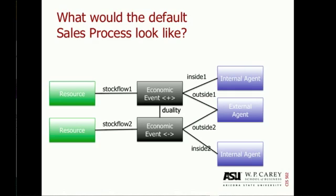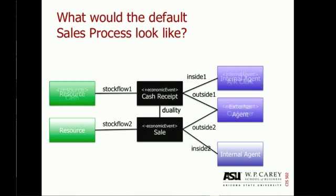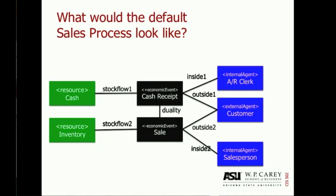If you remember from the first video, this is the basic pattern. There are two economic events, an increment and a decrement event, that are linked together with a duality association. For every event, you identify the resources that are either being increased or decreased and the agents who participate — specifically an internal agent who's responsible for the transaction and the external agent with whom the transaction is occurring. We completed that model for the sales process by seeing that the exchange was a sale and a cash receipt, so that we would decrease inventory in exchange for an increase in cash. In this video, we'll extend this model by adding in the business events and then integrating individual models for individual exchanges to become a business model.